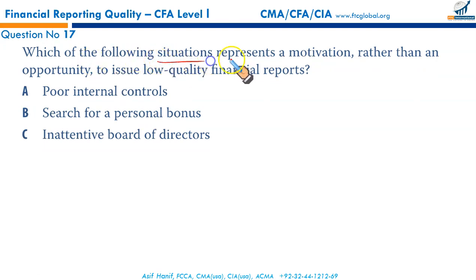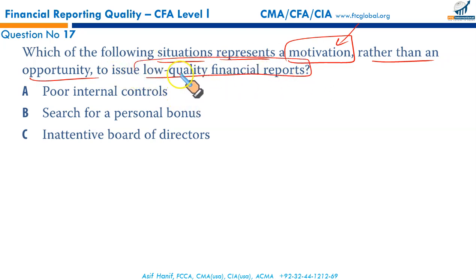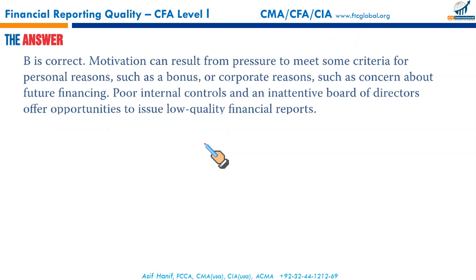Which of the following represents a motivation rather than an opportunity to issue low quality financial reports? Poor internal controls — that is an opportunity to commit fraud. Search for a personal bonus — yes, that's an incentive, a motivation that might push you to commit fraud. Inattentive board of directors — that's an opportunity; they're least interested. Among these, the motivation is B — search for a personal bonus. B is the correct option.